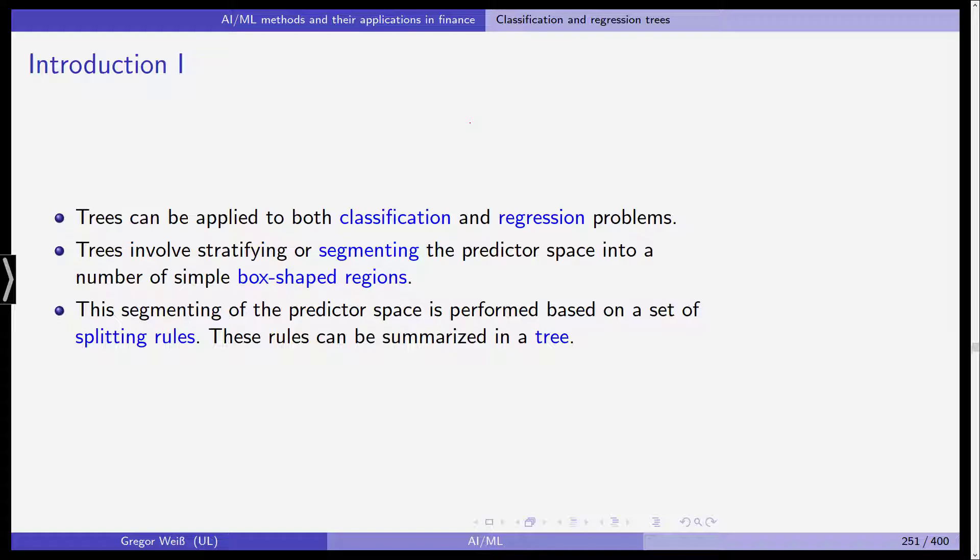These trees involve stratifying or segmenting the predictor space into a number of simple box-shaped regions. We've seen this with the support vector machines and the support vector classifier — we took the predictor space, for example a three-dimensional space, and cut it into two halves. This segmenting of the predictor space is performed based on a set of splitting rules, which can then be summarized in a tree.